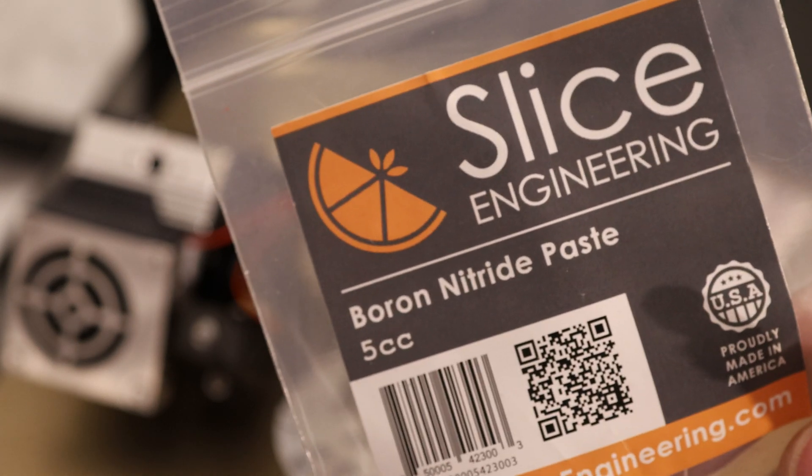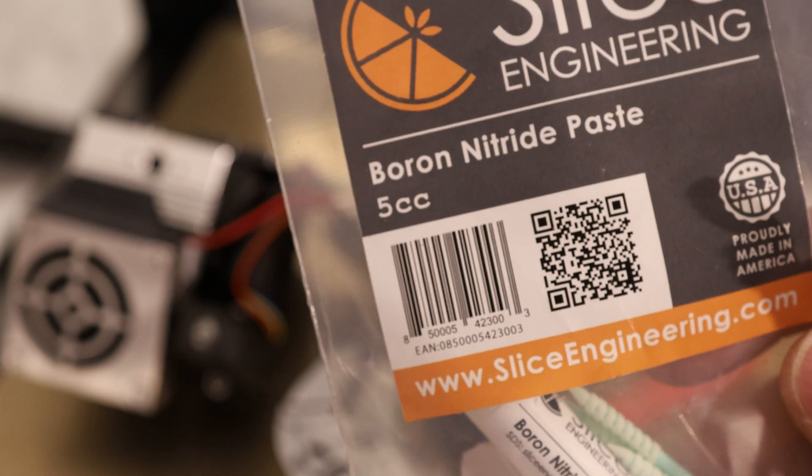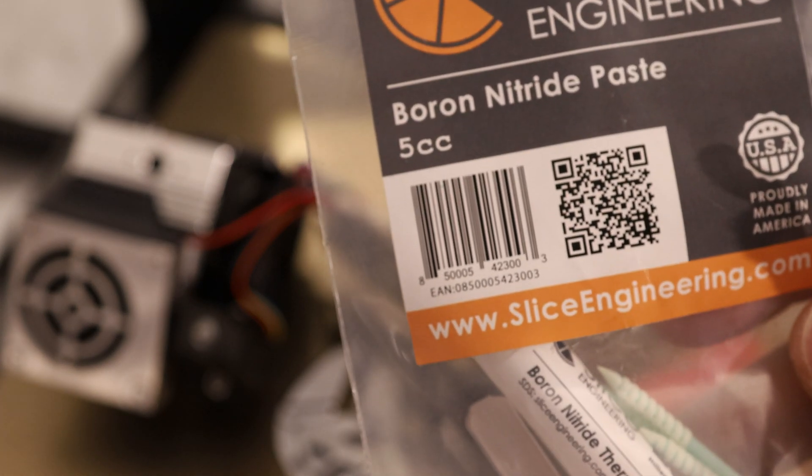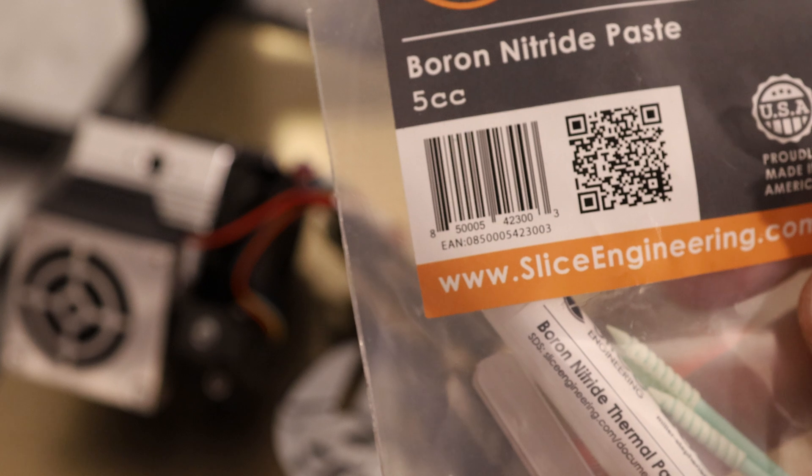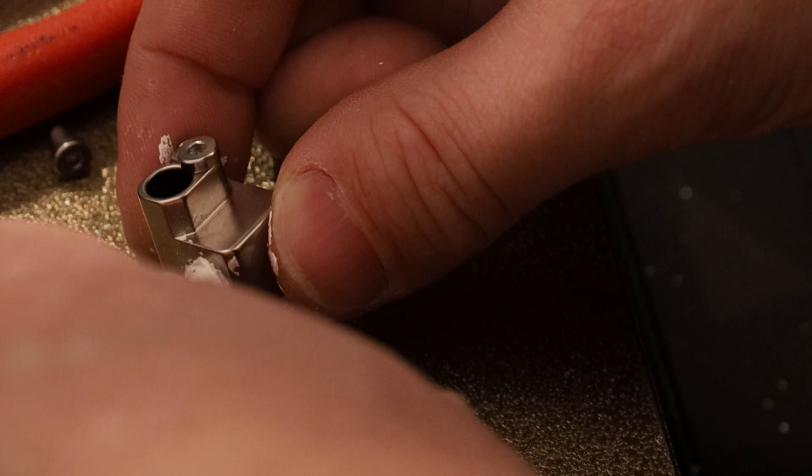The thermal compound I'm using is this boron nitride paste from Slice Engineering. It has similar properties to diamond and allows you to have very high heat transfer in a very heat-resistant material. I'll get it in all of these threads and screw these together.